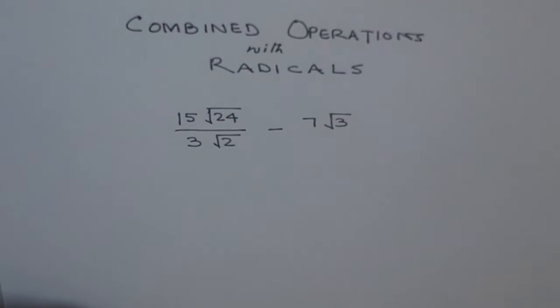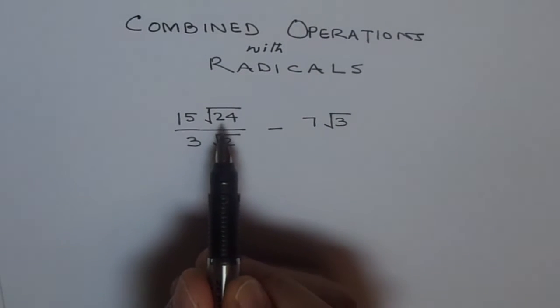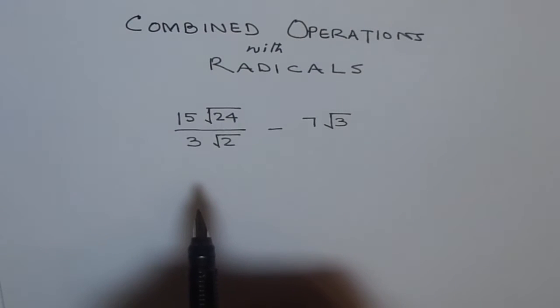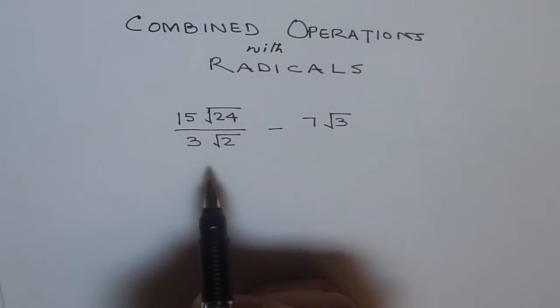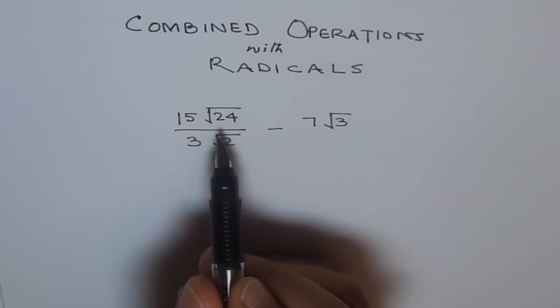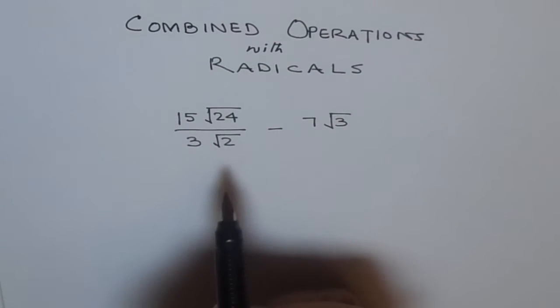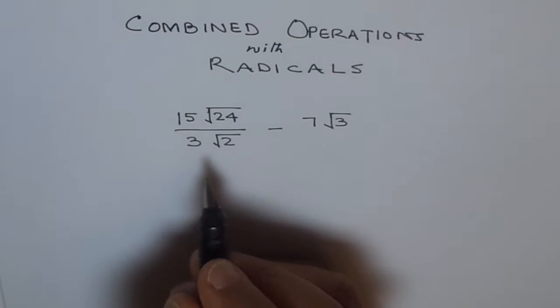Now lots of operations in radicals are very similar to normal operations. The only thing is that you cannot mix radical and outside things like normal. Here we can divide 15 by 3 and we can divide within radicals 24 by 2. So that is okay. Now let's do that.